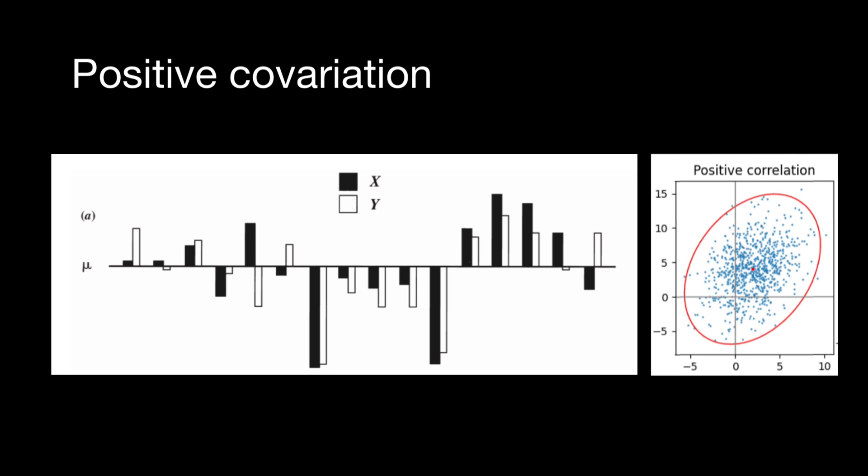For example, X and Y could be phenotypic values for different traits, breeding values for different traits, environmental effects for different traits, phenotypic values and breeding values for the same trait, or whatever values are of our interest.